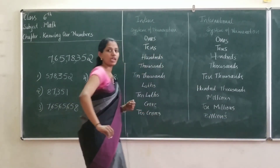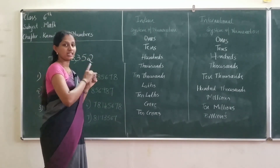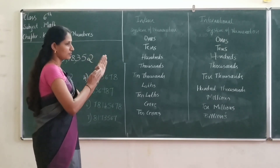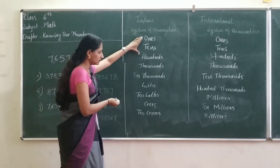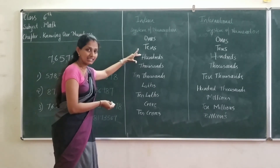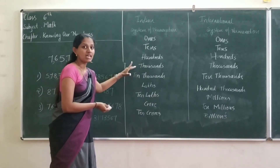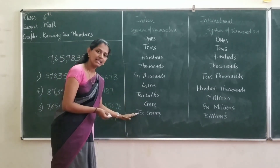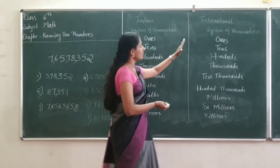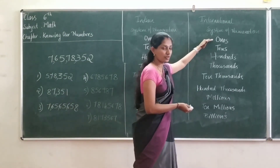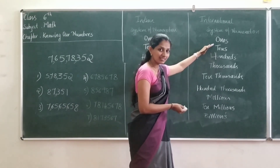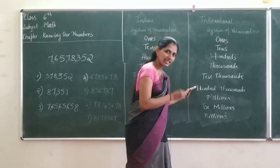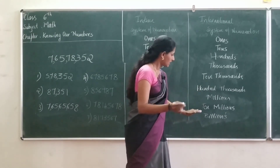You have to make a chart in your notebook. Indian system of numeration: ones, tens, hundreds, thousands, ten thousands, lakhs, ten lakhs, crore, and ten crore. Then international system of numeration: ones, tens, hundreds, thousands, ten thousands, hundred thousands, millions, ten millions, billions.